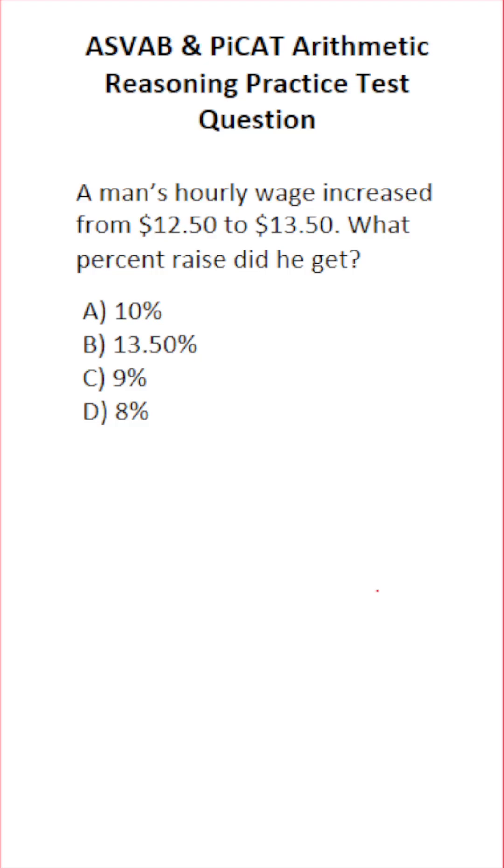This arithmetic reasoning practice test question for the ASFAB and PyCat says, a man's hourly wage increased from $12.50 to $13.50. What percent raise did he get?